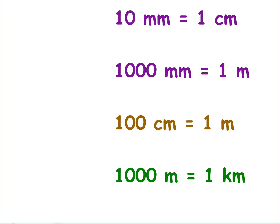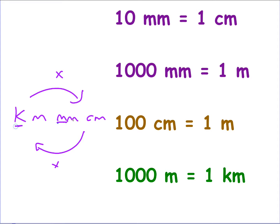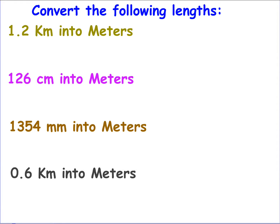Some people prefer to remember the conversions directly — 10 millimetres is a centimetre, there are a thousand millimetres in a metre and so on. But most students prefer to quickly scribble down the prefix guide in exams and use it for conversions. You've got the kilo, the metre, the centimetre and the millimetre. If I go from big to small, I multiply; from small to big, I divide.